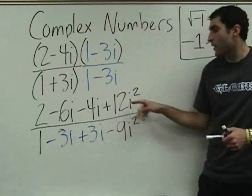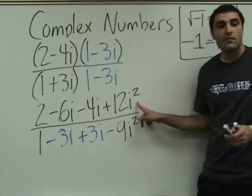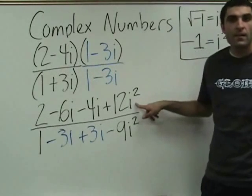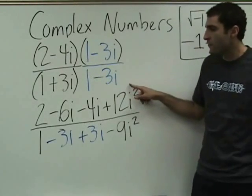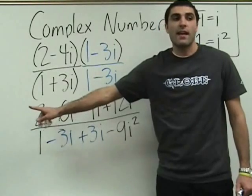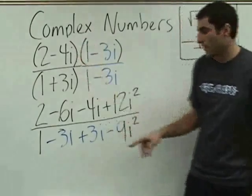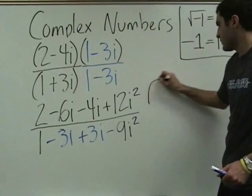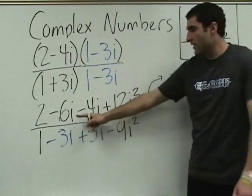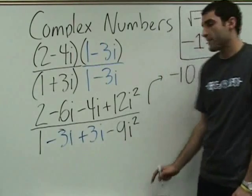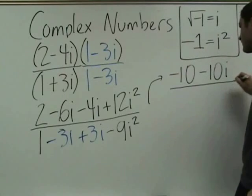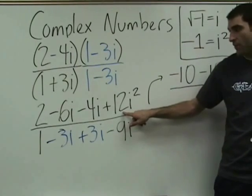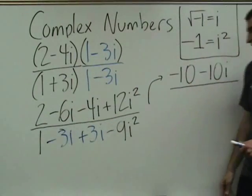On the top, what does this actually become? 12i squared minus 10i plus 2. So you have minus 10i, correct. But what about the 12i squared — what does it become? Minus 12. So this is minus 12. Minus 12 combines with positive 2 to make negative 10. So the top is negative 10 minus 10i, since negative 6i minus 4i is negative 10i.